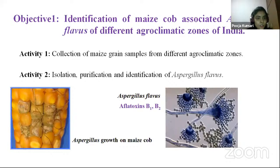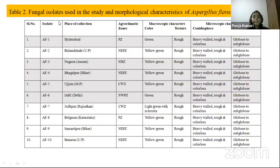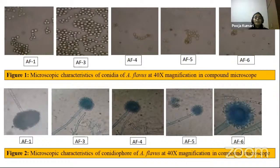From different agro-climatic zones, 20 fungal isolates were collected and purified. Macroscopic characteristics showed yellow-green to light green colony color with rough texture. Microscopically, conidial heads were heavy-walled, rough, colorless, with conidia globose to sub-globose in shape. These are representative photographs of the fungus from all five agro-climatic zones of India.